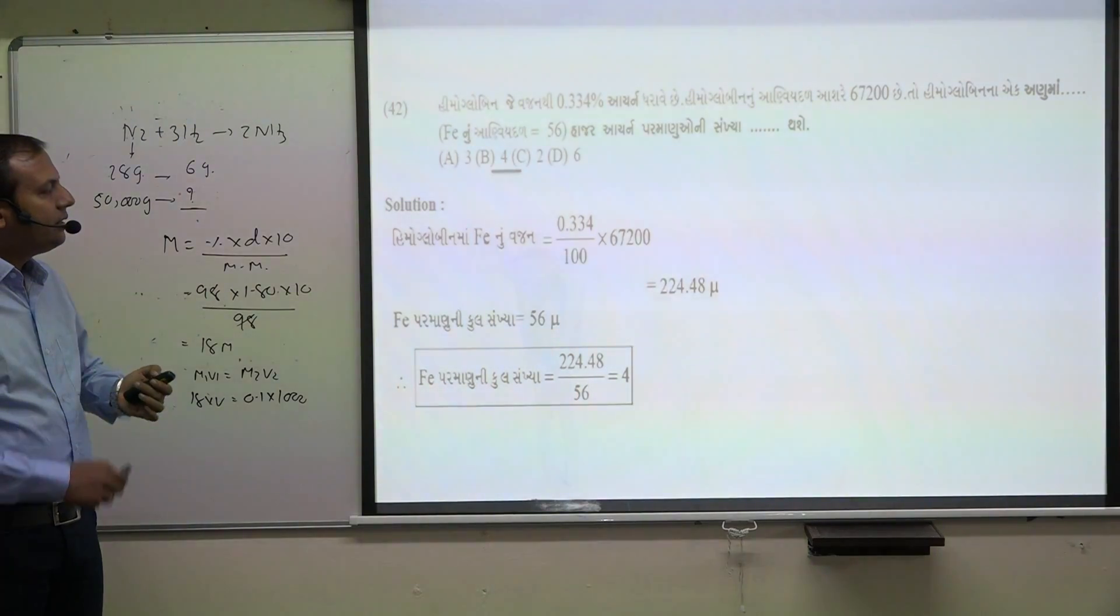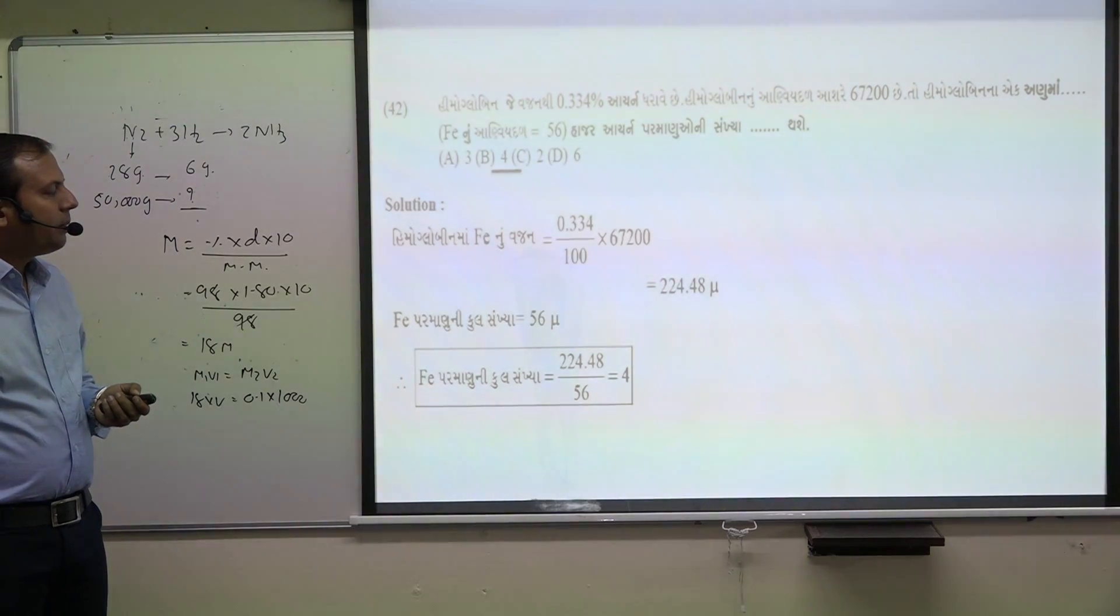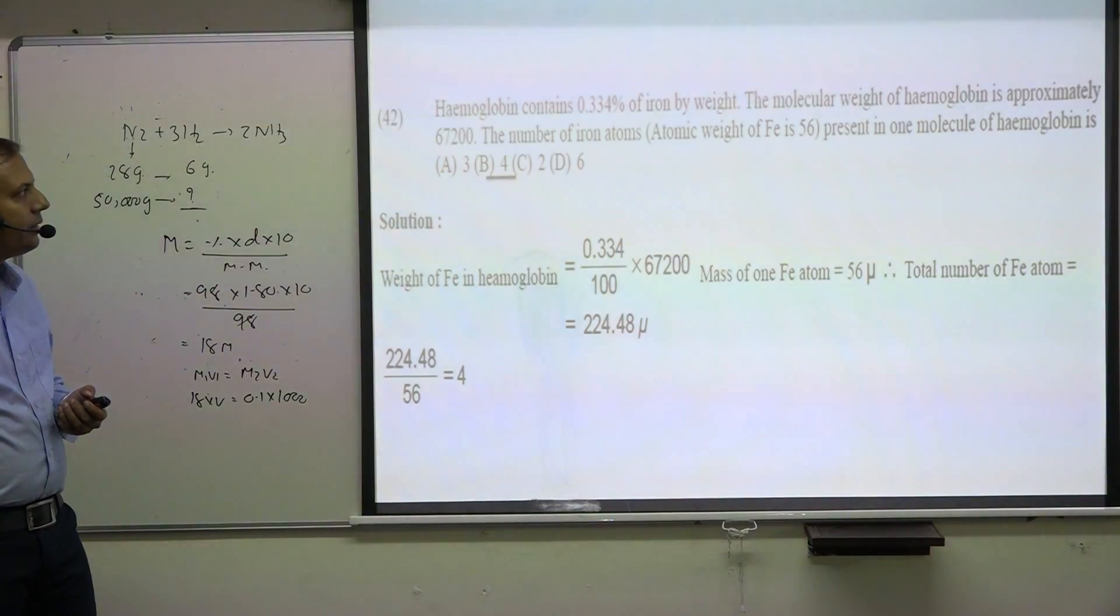Hemoglobin contains 0.33 percentage of iron by weight, and the molecular weight of hemoglobin is approximately 67,200. Find the number of iron atoms present in one molecule of hemoglobin.